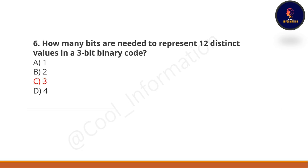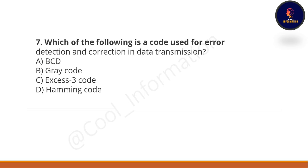Next question: Which of the following is a code used for error detection and correction in data transmission? Option A: BCD. Option B: Gray code. Option C: XS-3 code. Option D: Hamming code. And the correct option is option number D, which is Hamming code.